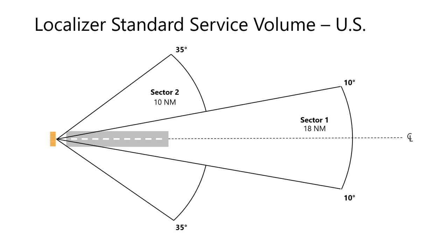The standard service volume, or SSV, is the volume of airspace defined by the national standard. Here we can see the two sectors associated with the localizer that must provide acceptable guidance.